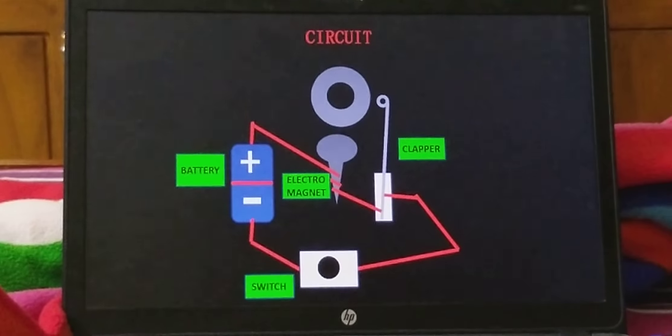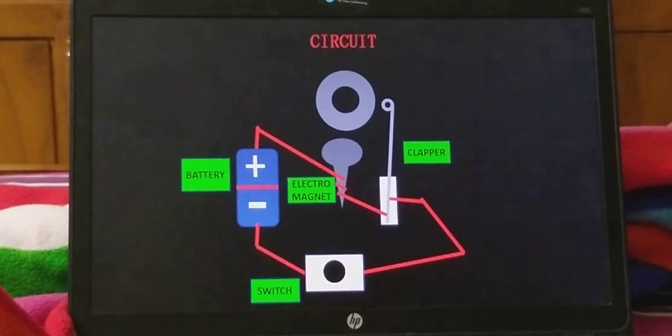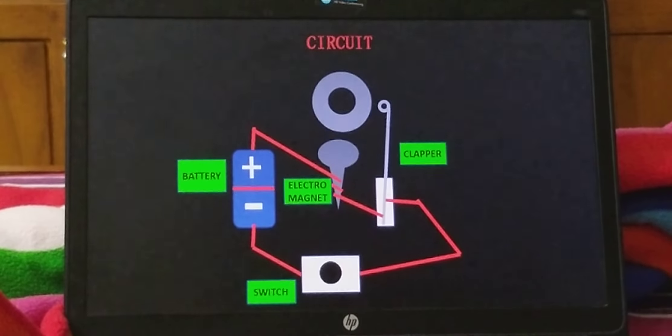This is the circuit of the bell. It consists of a battery, switch, electromagnetic coil and a clapper.